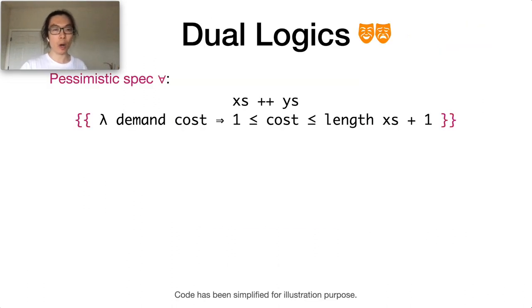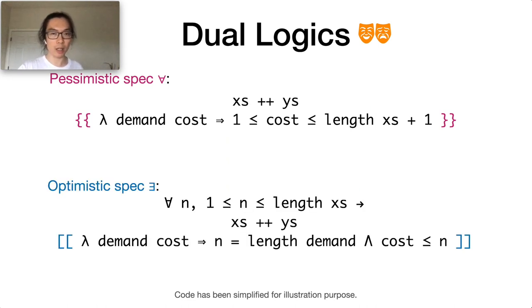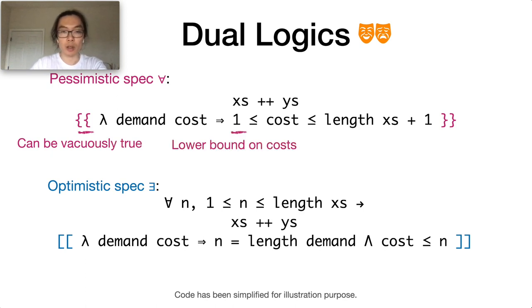Here we show one pessimistic spec and one optimistic spec for the append function. The pessimistic spec talks about all the possible costs, including those with redundant steps. It can be vacuously true, it can give a good lower bound on cost, but the upper bound might be coarse sometimes because of the redundant steps.